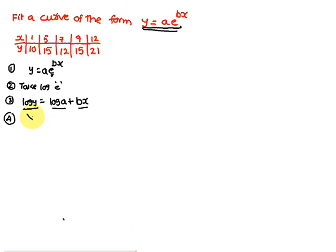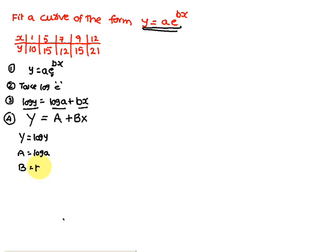So the straight line form is: Y = A + b·X, where capital Y = log(small y), capital A = log(small a), capital B = small b, and capital X = small x. So this is now in the form Y = A + BX, and the capital Y, A, B, X terms have been defined.